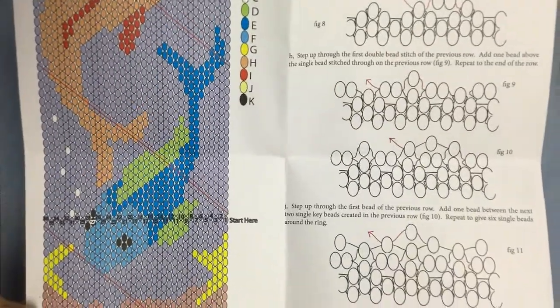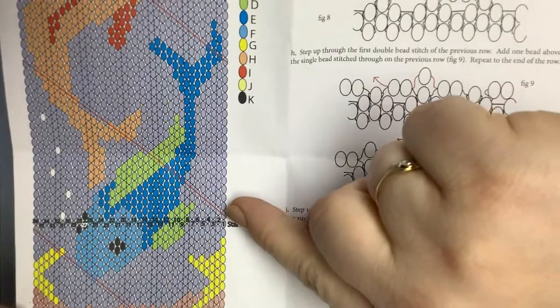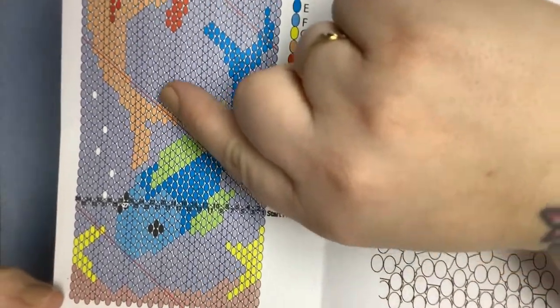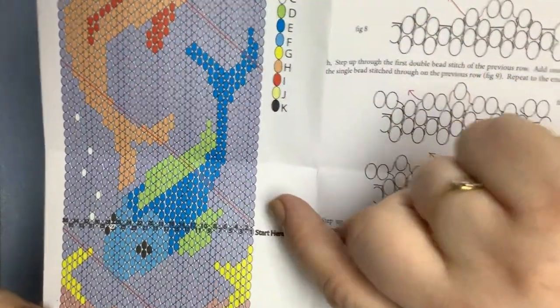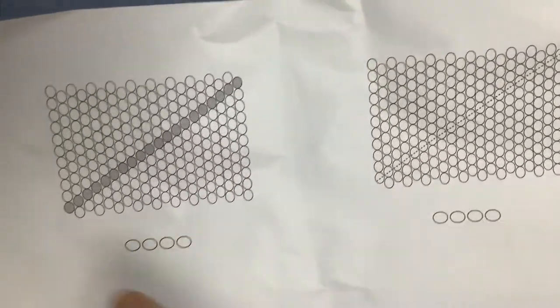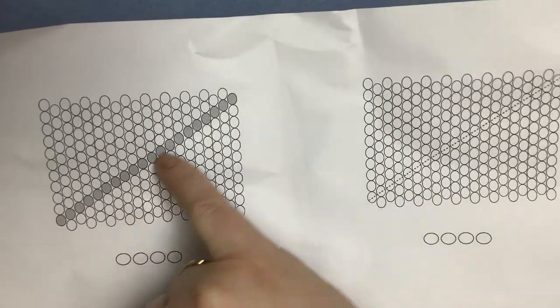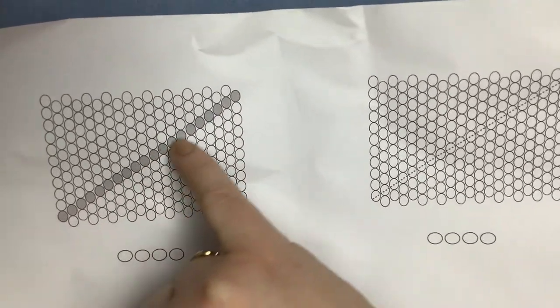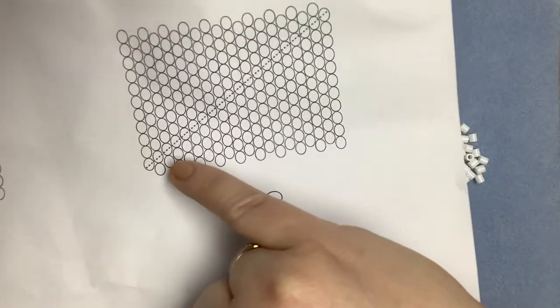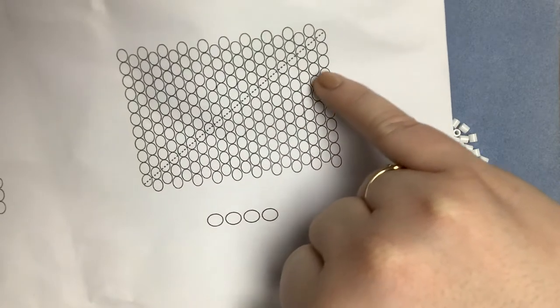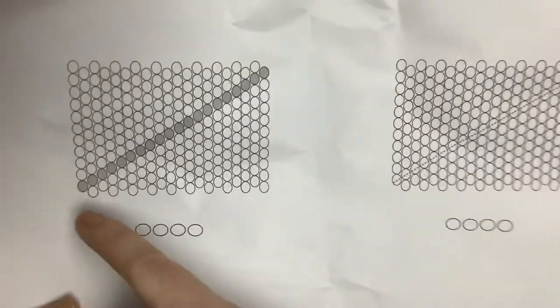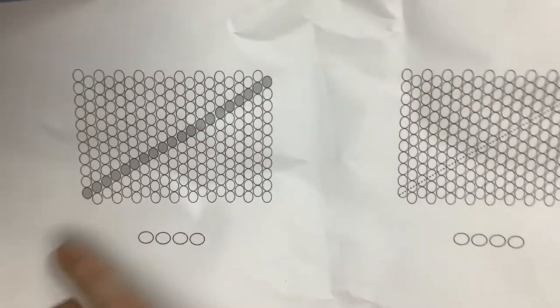The tubular peyote grids have also got this line marked on them here. It's marked in red on this grid, or if I show you, we can see it a bit more clearly on this plain grid here. We've got a single grey dot or a dotted line running just through the grid here, and this represents the first bead of every row.